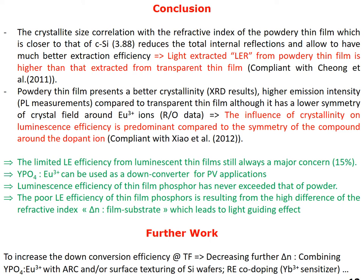As further work for increasing the down-conversion efficiency of thin films, we can further decrease the difference in refractive index between thin films and substrates, or by combining yttrium orthophosphate doped with europium with anti-reflection coatings like silicon nitride, or by surface texturing of silicon wafers, or by co-doping the host matrix by introducing yttrium as a sensitizer, for example. Thank you very much for your attention.